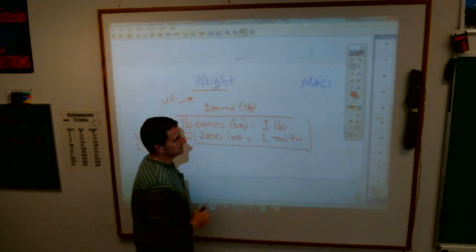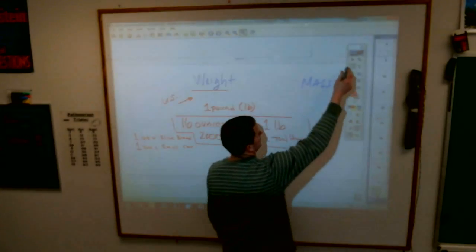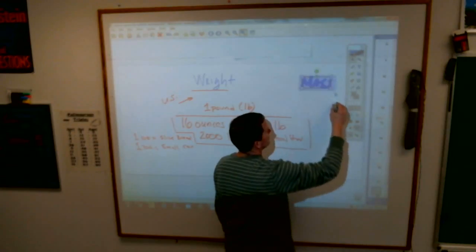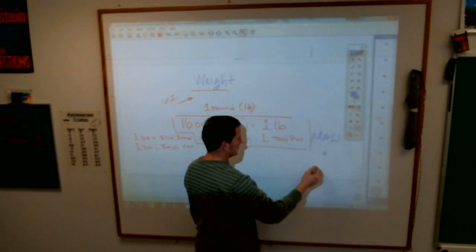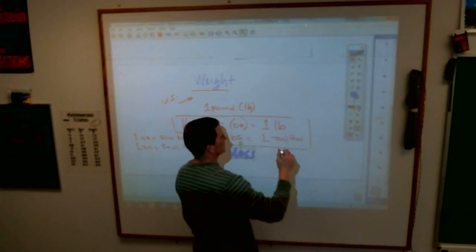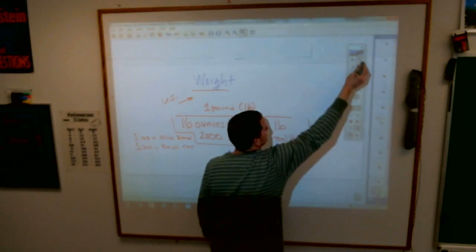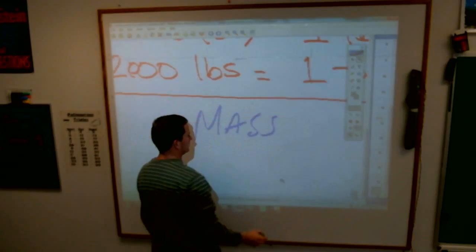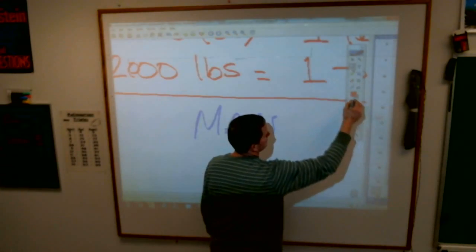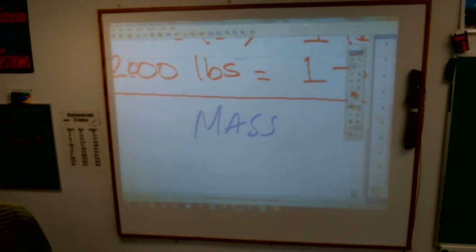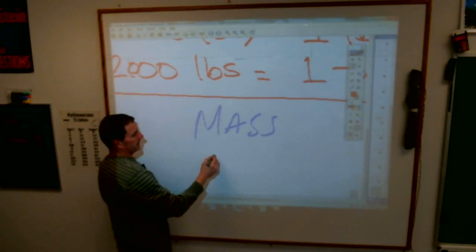The other ones, the metric system, kind of simpler. Let's see if I can move this whole thing. I can't. I'm going to put it down here. I'll go over this up here. In the metric system, we use the one basic unit is a gram.